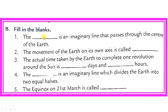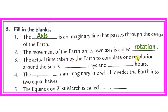Part B, fill in the blanks. First: the dash is an imaginary line that passes through the center of the earth — answer will be axis. The movement of the earth on its own axis is called rotation. The actual time taken by the earth to complete one revolution around the sun is 365 days and 6 hours. The dash is an imaginary line which divides the earth into two equal halves — the answer will be equator.